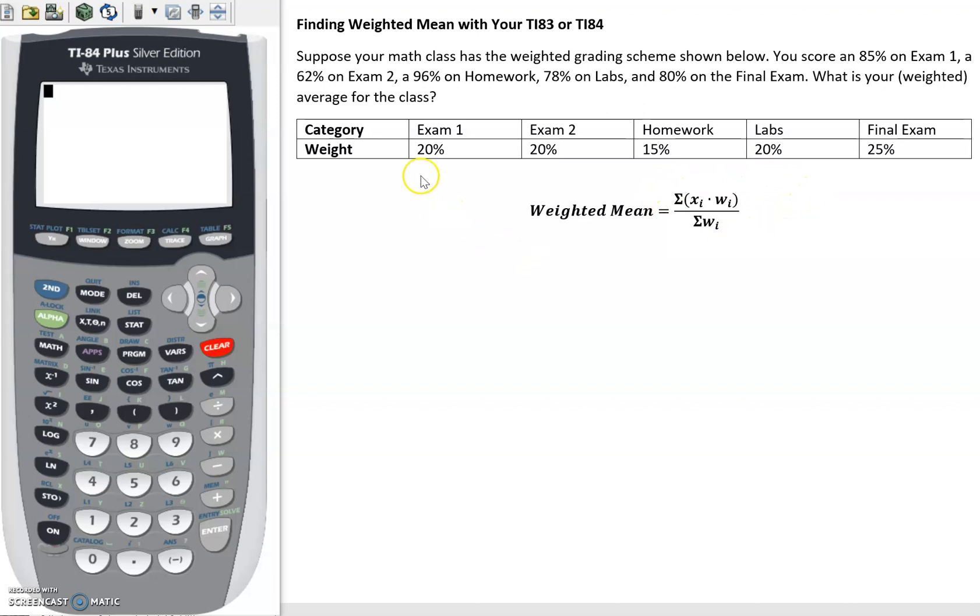The other thing we can do is punch this info into our calculator into a couple of different lists and then use the calculator to find this a little bit quicker. So the individual scores that you got, the 85%, 62%, 96%, so on, you can put those into a list.